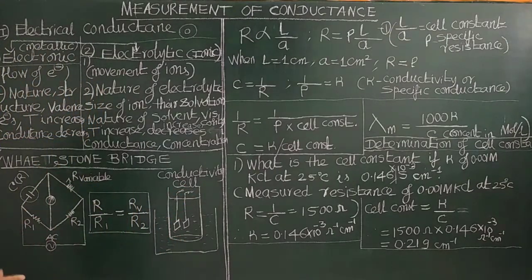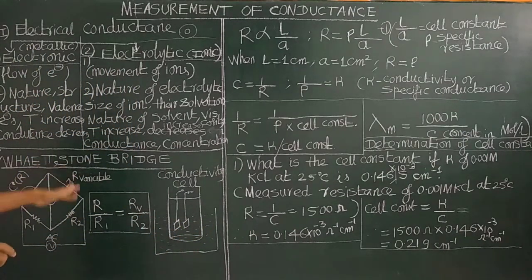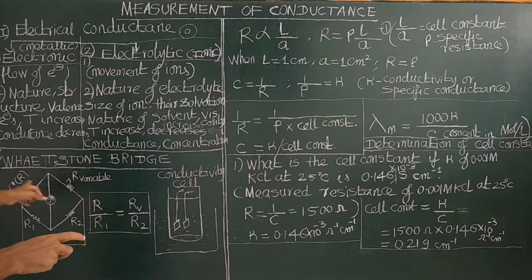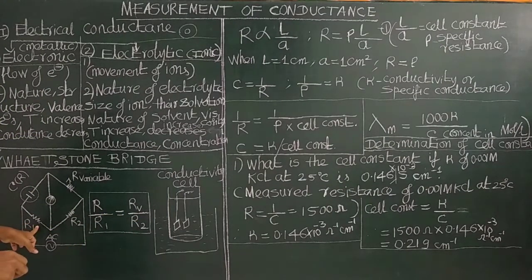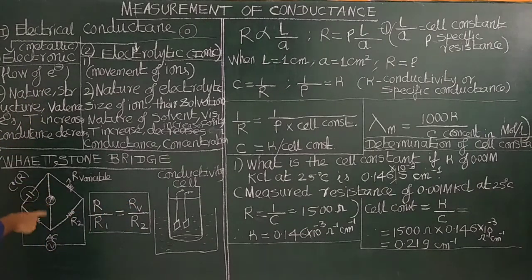The Wheatstone bridge setup has four resistances: R1, R2, R3, and R4. R3 is a variable resistance. The conductivity cell is attached to the bridge. When the bridge is balanced — meaning R1/R2 = R3/R4 — there is no deflection and we can determine the unknown resistance.